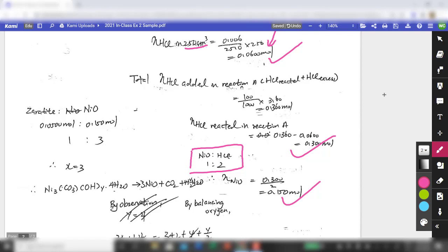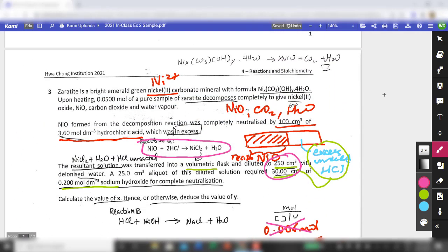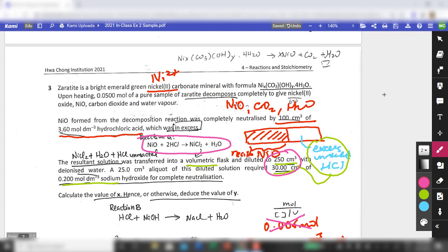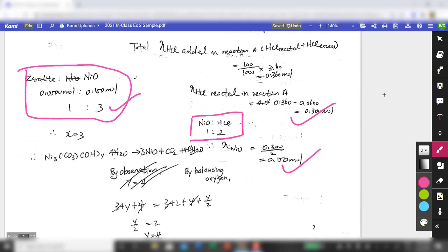And earlier on, you were told that the number of moles of zerotide is 0.05. So if you just find out the stoichiometric ratio, that's 1 is to 3. And if you do a quick look at this particular reaction, the minerals contains a few elements, nickel, carbon, oxygen, hydrogen. But all the nickels get converted to nickel oxide. So therefore, you can quickly conclude that the number of moles of nickel oxide is equivalent to the number of moles of nickel that's originally present. So from here, the students concluded that x is equal to 3. So that's a quick conclusion.